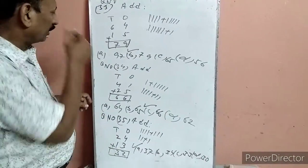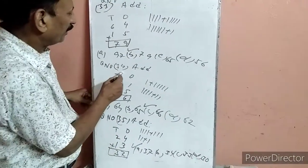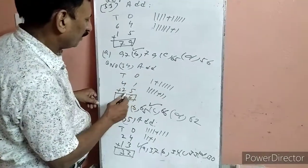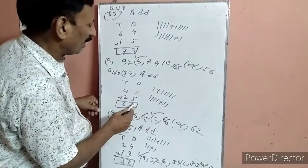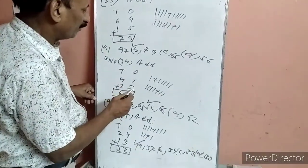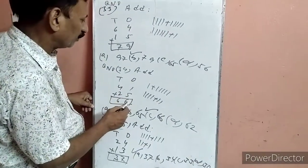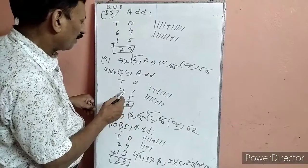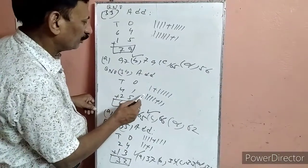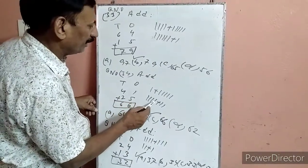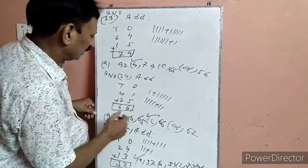Question 34: Add — 41 plus 25. Units: 1 plus 5 = 6. Tens: 4 plus 2 = 6. Answer 66.